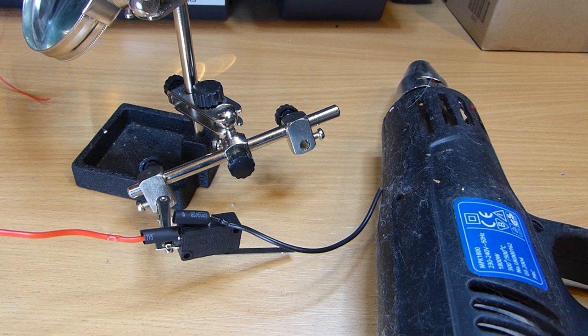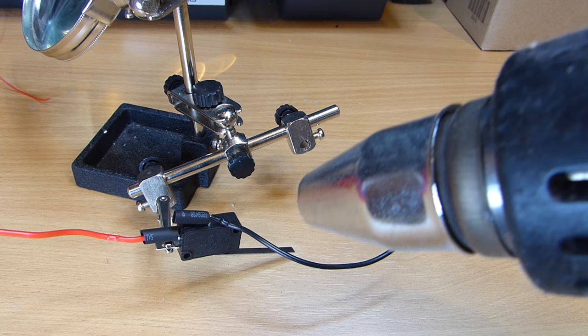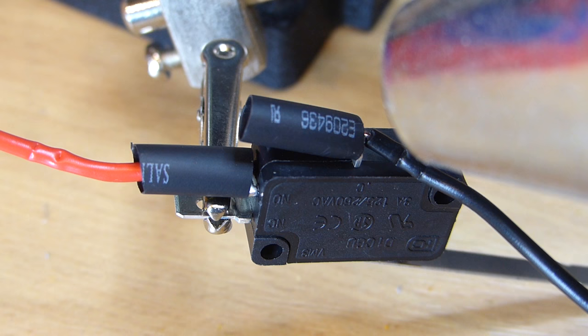Take a heat gun, lighter or other heat source and heat up the heat shrink in order to conform and stick it to the connection.